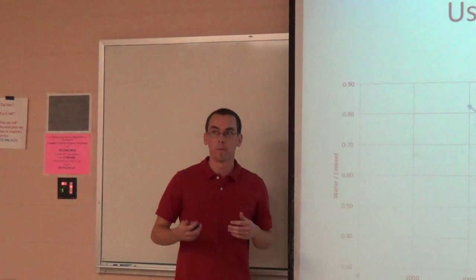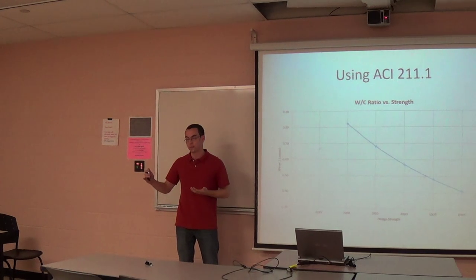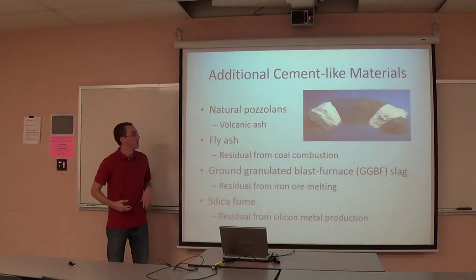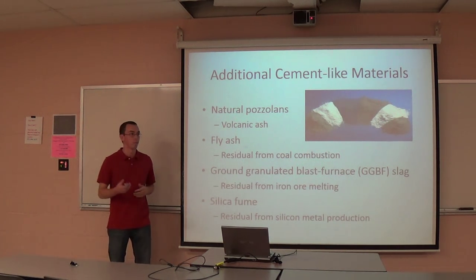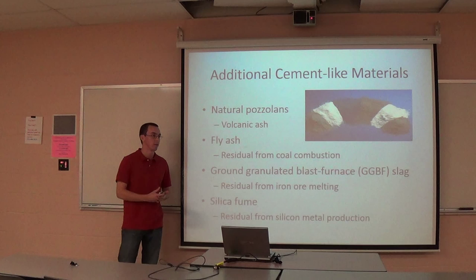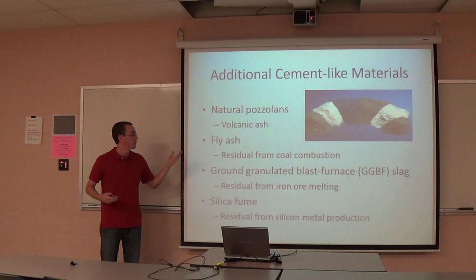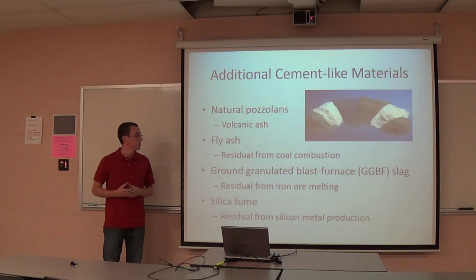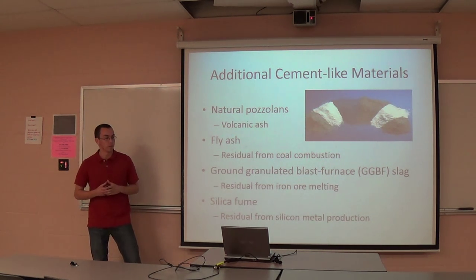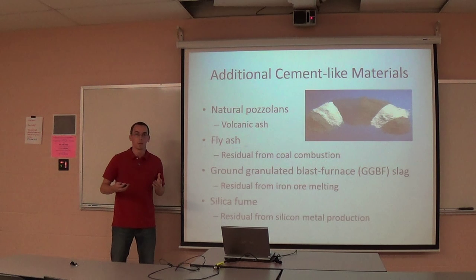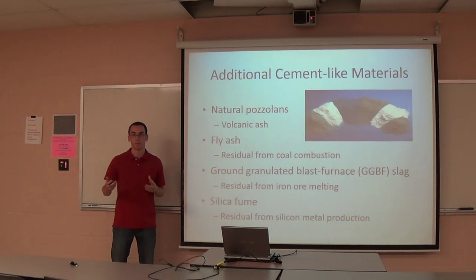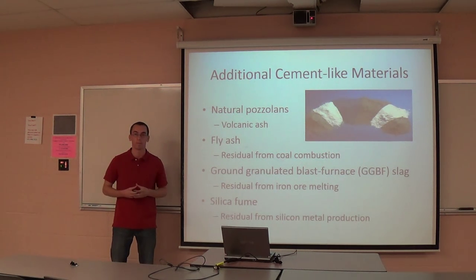You want to limit the amount of water in the mix, and that makes your design stronger. One way to lower the water content and drive your strength up is adding supplementary cementitious materials — that could be volcanic ash, fly ash, blast furnace slag, or silica fume. These residuals don't necessarily have cement-like properties by themselves, but when they're mixed with cement and start reacting with the lime in the cement, they develop cement-like properties and can help bring your design strength up.